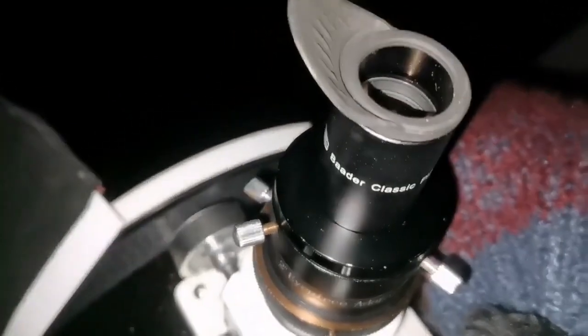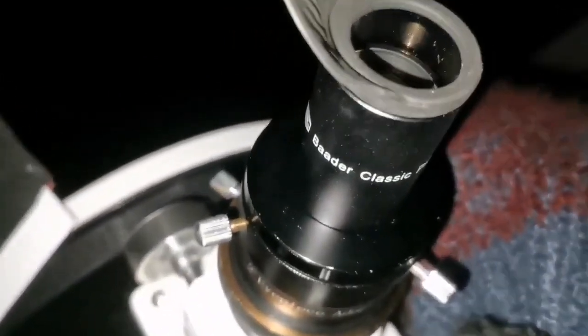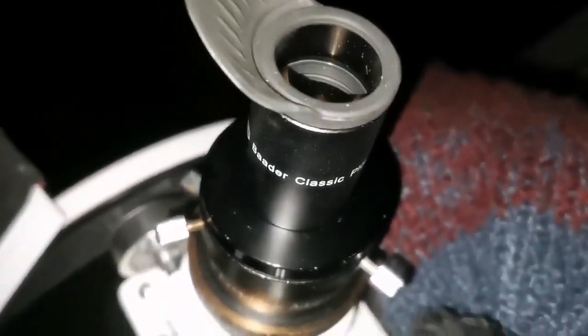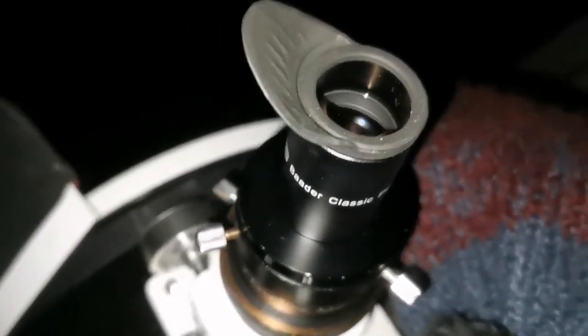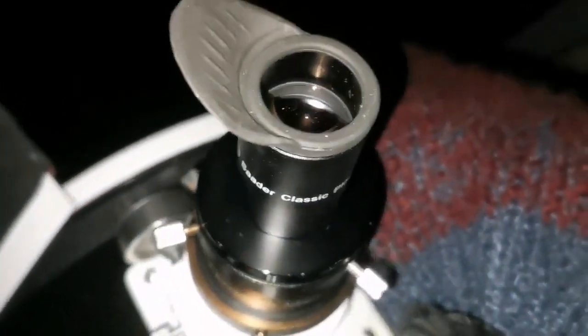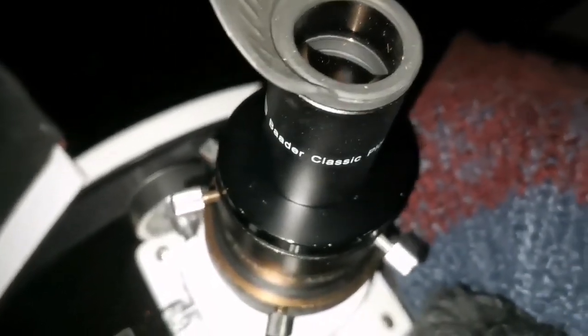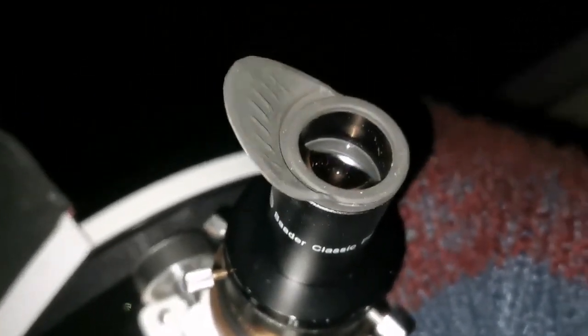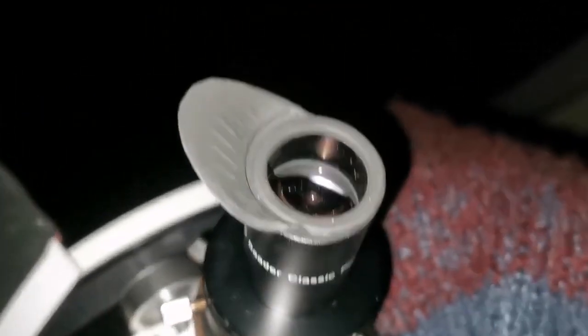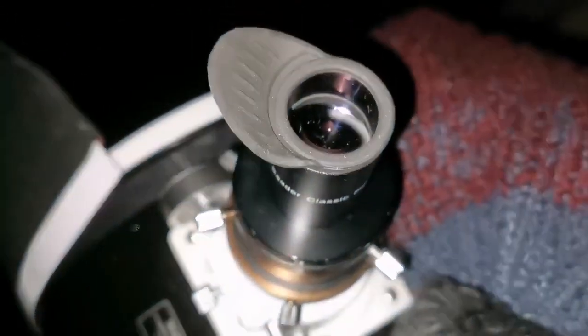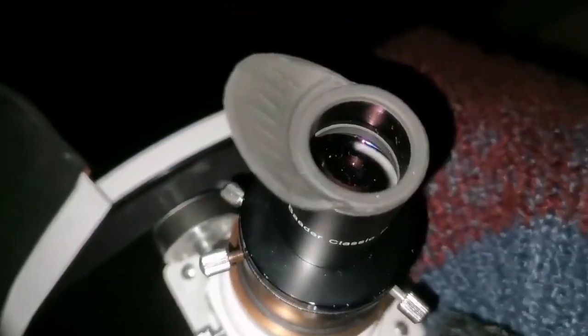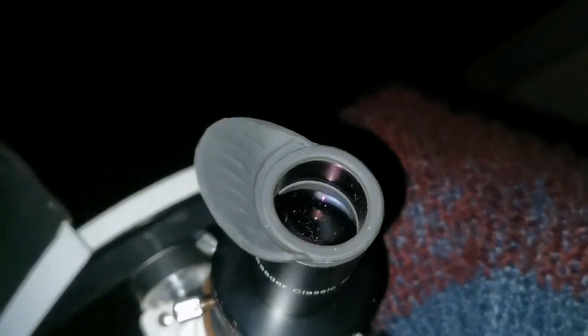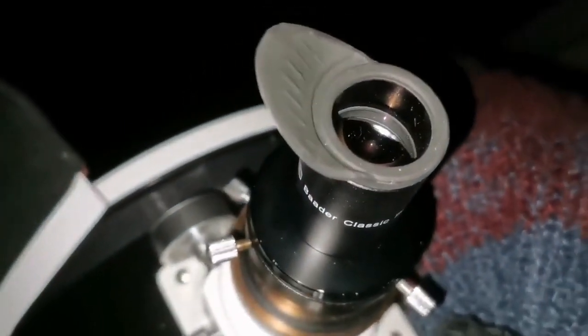Okay, this is a Baader 32 millimeter Plossl, and again I say that I prefer the 25 millimeter unbranded bucket load bought Plossl. I've tested this in the refractor. That was the best in the refractor, I mean a 60 millimeter vintage refractor. I think it was a Pentax I tried.